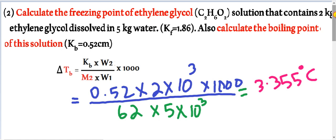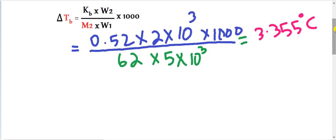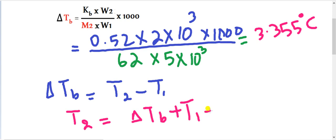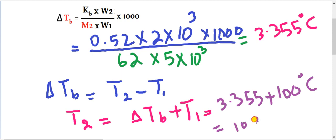Now we find the boiling point of the solution. Boiling point formula: T2 equals Del Tb plus T1. Del Tb is 3.355 degrees centigrade, and T1 (boiling point of water) is 100 degrees centigrade. So boiling point of solution T2 equals 103.355 degrees centigrade. Students, these were direct solve questions.